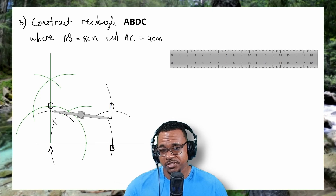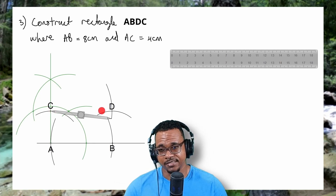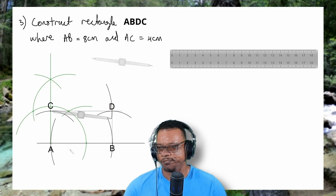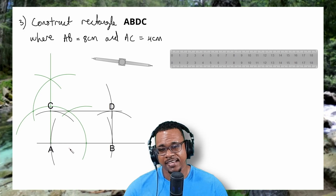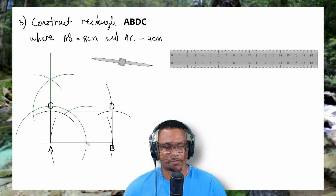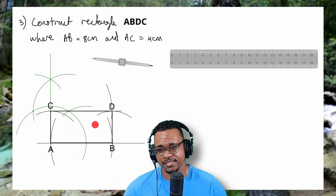Now it's just to take a ruler and connect points C to D, and D to B. My last step is to darken my final outline. And there you have it — rectangle ABDC.